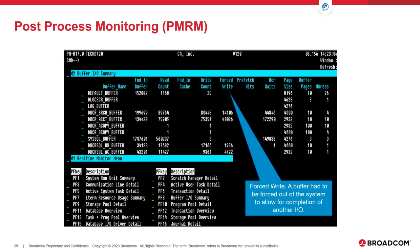Switching from DCMT commands to PMRM options — we're in PF8, the Buffer IO Summary screen, similar to the DCMT Display Statistics Buffer command. Values in the fourth column indicate a buffer issue where there aren't enough buffer pages, so buffers had to be forced out of the system to allow completion of other IOs. There's also a high number of BCR — Buffer Control Record — waits, meaning we're waiting until a buffer page becomes available. We'll need to increase the number of buffer pages.